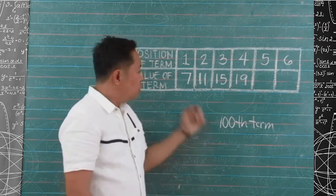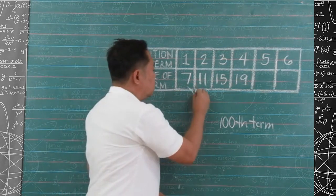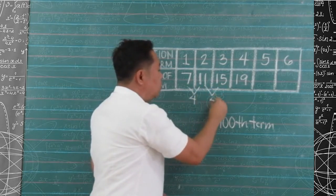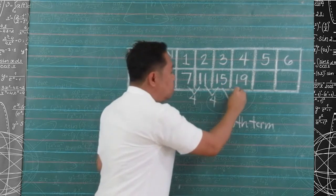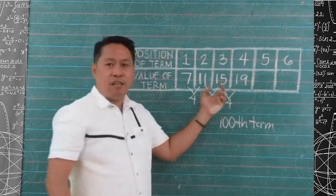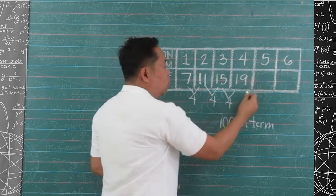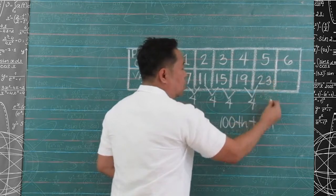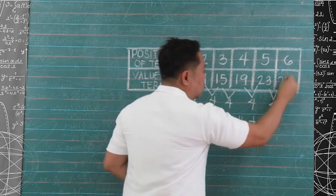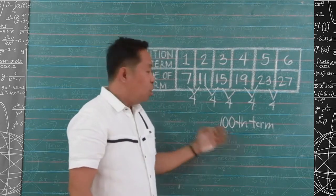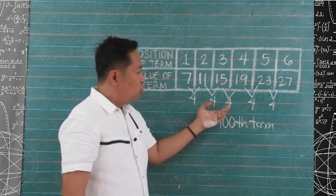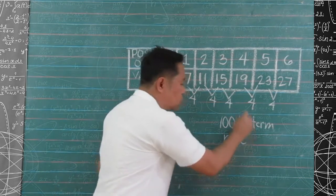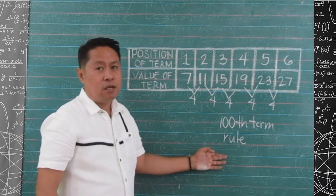You're right. We keep on adding 4. 7 plus 4 is 11. 11 plus 4 is 15. 15 plus 4 is 19. So, to get the fifth term, we have to add 4 to 19 to get 23. And 23 plus 4 is 27. We can keep on adding 4 until we get the desired term, but we can use our rule to make it easier.